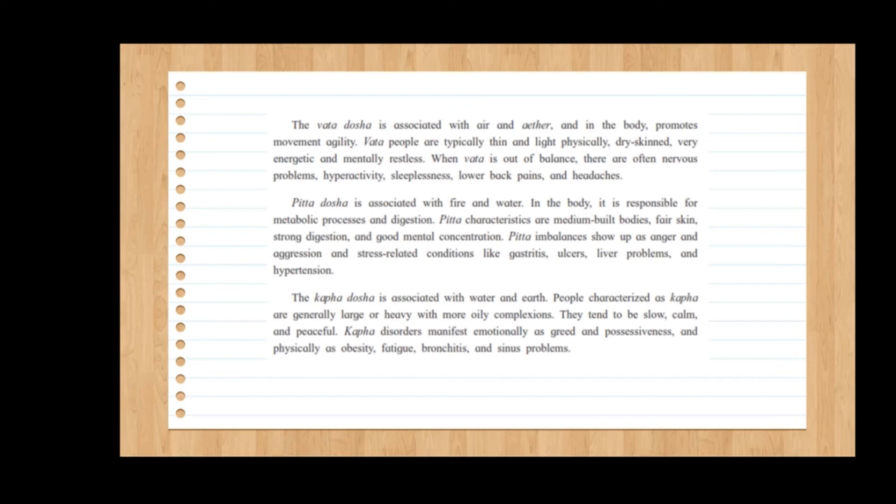The Vata dosha is associated with air and in the body promotes movement and agility. Vata people are typically thin and light physically, with dry skin. They are energetic and mentally restless. When Vata is out of balance, there are often nerve problems, hyperactivity, sleeplessness, lower back pain, and headache.